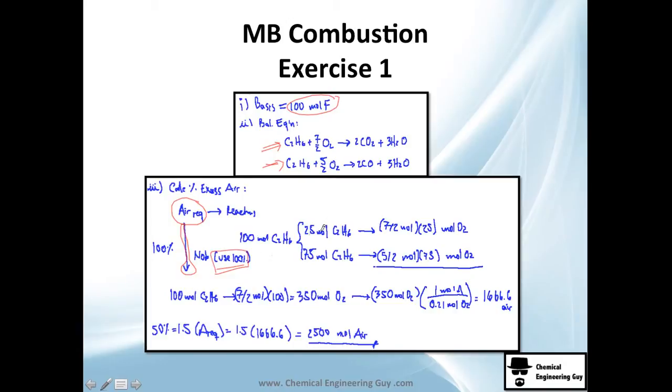By definition, we will use 100% conversion to calculate air requirements. How many moles of C2H6 are going to react to CO versus CO2? This is the amount of oxygen required for the CO section which is 25 moles, and 75 moles go to CO2.